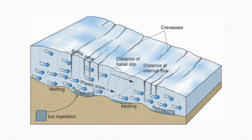Internal plastic flow, or internal deformation, is the process of ice becoming deformed at the depths of the glacier. The high pressures that the glacier exerts on the bottom of the ice deform it into a more liquid property, and then ice slides over it. This allows the glacier to slowly move.